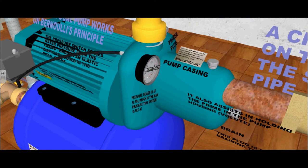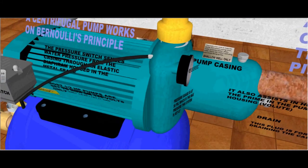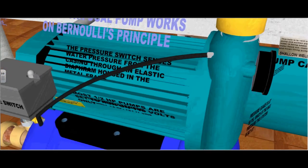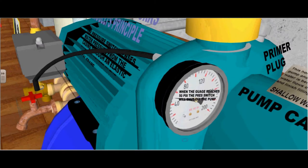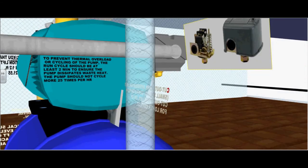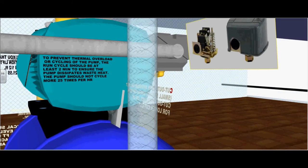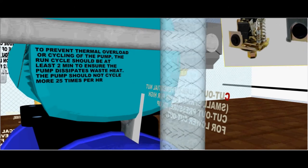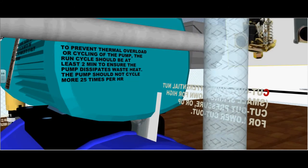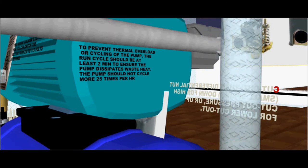This pressure switch senses water pressure from the casing through an elastic diaphragm housed in the metal frame. When the gauge reaches 50 psi, the pressure switch should shut the pump off. To prevent thermal overload or cycling of the pump, the run cycle should be at least 2 minutes to ensure the pump dissipates the waste heat. The pump should not cycle more than 25 times per hour.